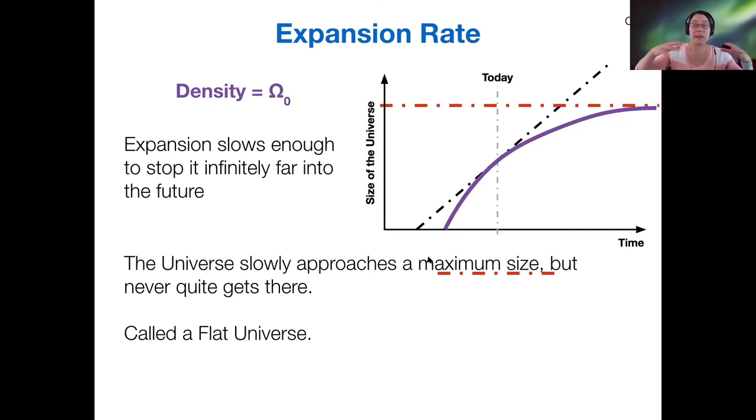So that's the critical density case. It tells us that over time, the density or the expansion will slow and slow and slow until eventually we reach a maximum size, but you never exactly get there. It's what we call asymptotic. So this type of universe for reasons we'll see in a moment is called a flat universe.